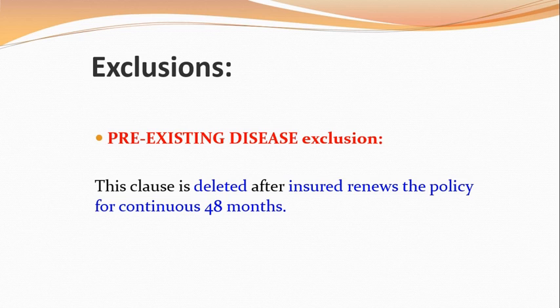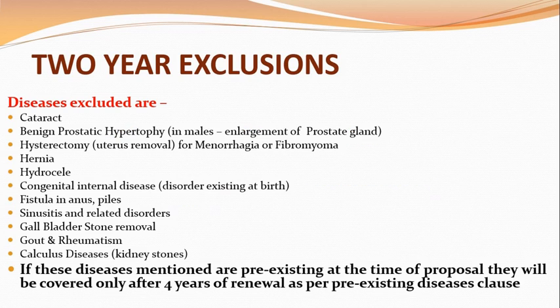There are also some two-year exclusions common in almost all health insurance policies. Questions have come asking which among the following is a two-year exclusion. The basic idea should be known. Two-year exclusions include: cataract, prostate hypertrophy, hysterectomy, hernia, hydrocele, gallbladder stones, kidney stones, gout, and arthritis-related problems. These are common to almost all health policies.